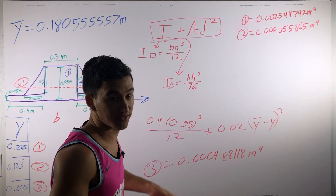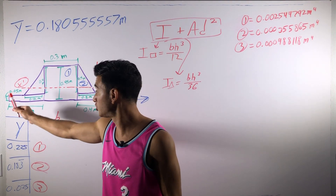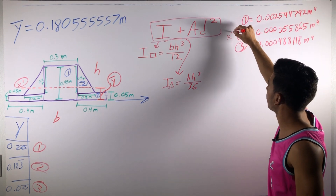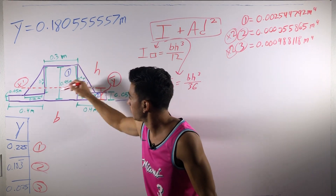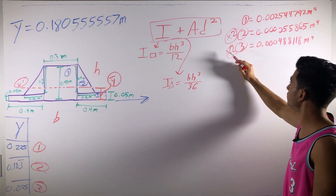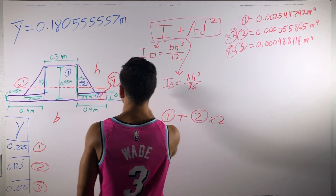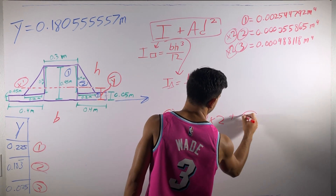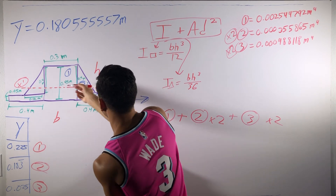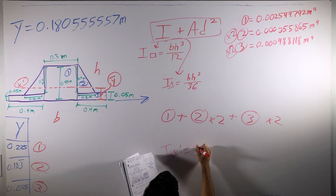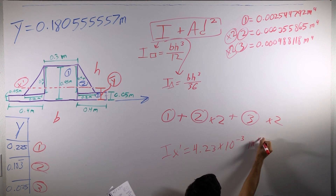Now you've got the moment of inertia for each section: 1, 2, and 3. Don't forget there are two triangles and two rectangles. So whatever we get for section two, multiply it by two; whatever we get for section three, multiply it by two as well. Take section one, add two times section two, add two times section three. When you do that, the final moment of inertia about this line comes out to 4.23 × 10⁻³ meters to the fourth. There's your final answer.